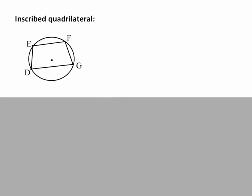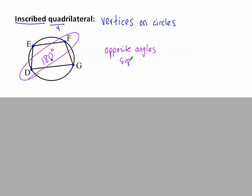And finally, inscribed quadrilaterals. Every time we see inscribed, we want to think about the vertices are on the circle. Each vertex of the quadrilateral is on the circle. The main thing to remember about this is that the opposite angles add up to 180 degrees. They're supplementary. Opposite angles are supplementary.